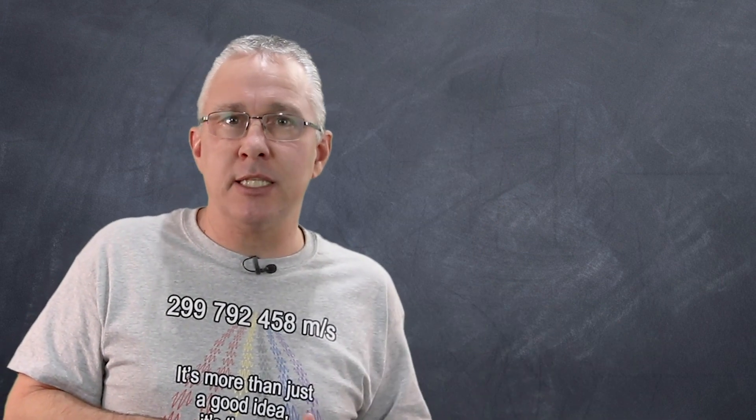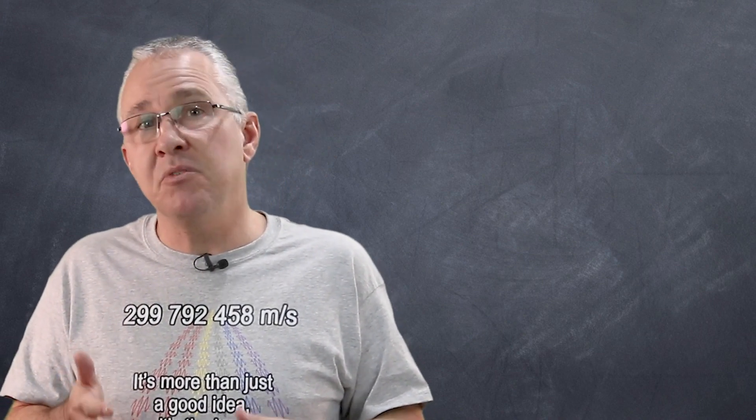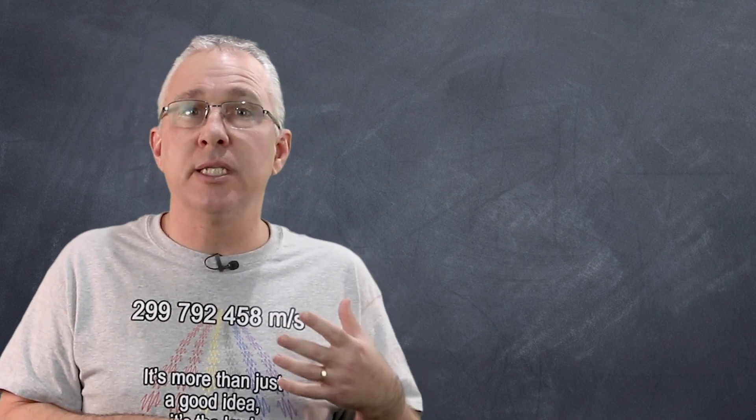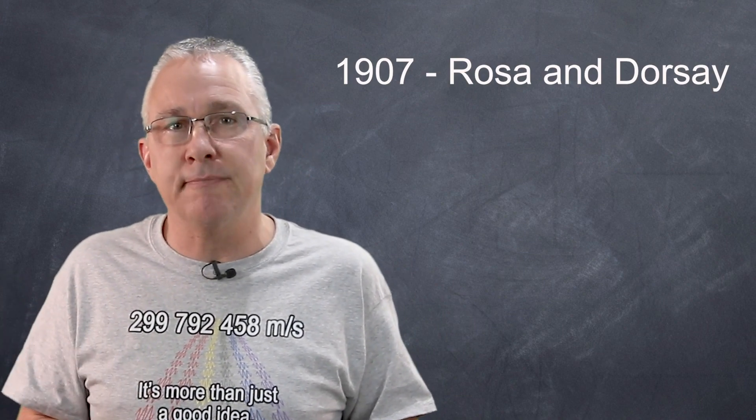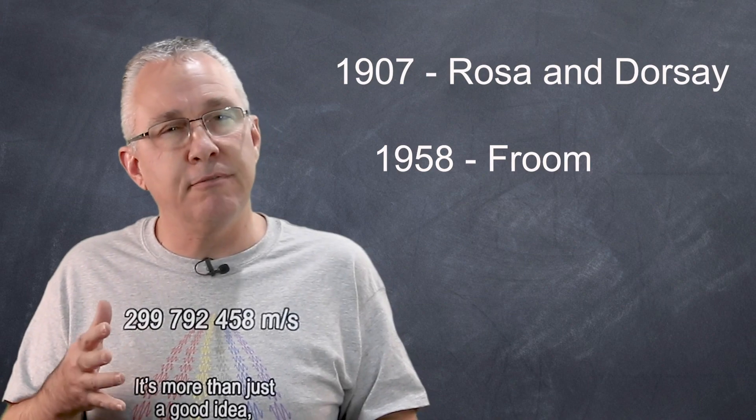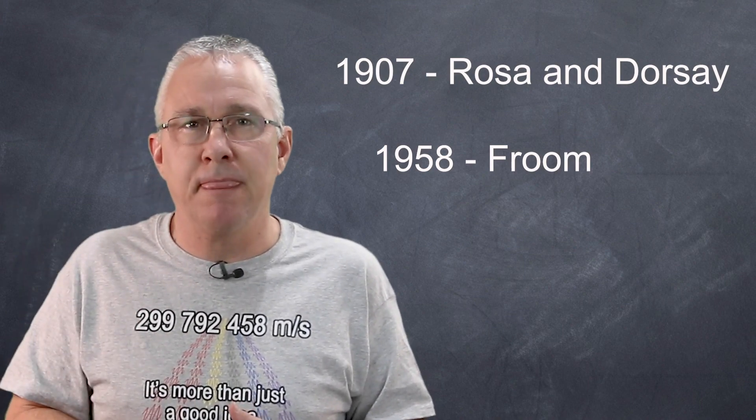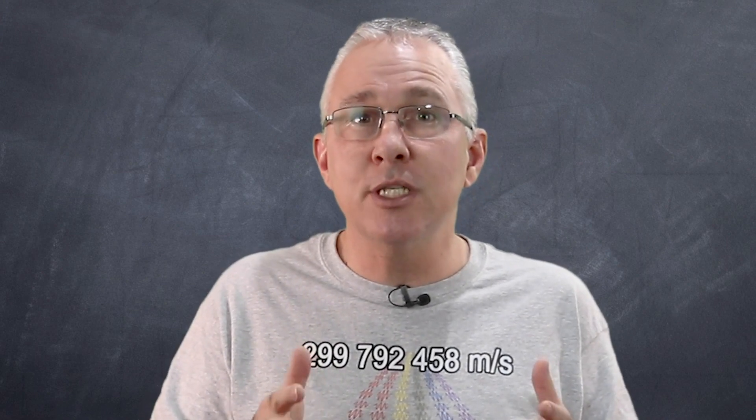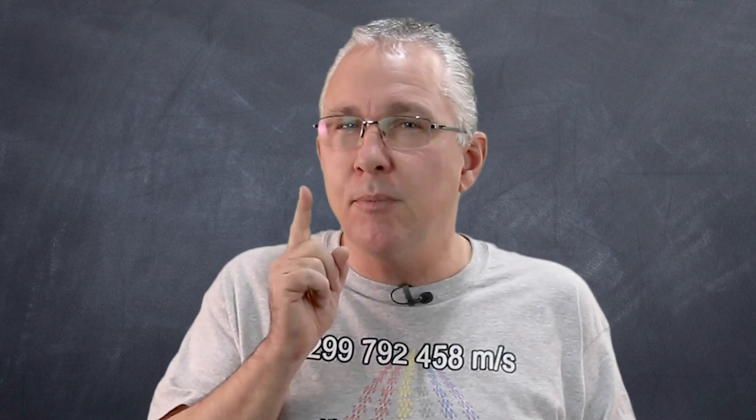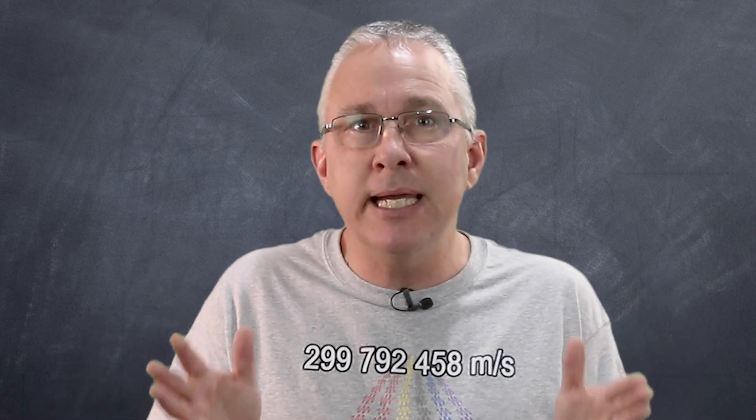Now, I haven't included other attempts at the measurement of the speed of light. For example, there was the method using the electromagnetic constants by Rosa and Dorsey in 1907, and the use of radio interferometry by Froome in 1958. You can research those. The point I want to make, though, is that as technology improved, so did the precision of the speed of light. But one thing underpinning them all, right from the beginning, was that the standard for the meter and the second was paramount.